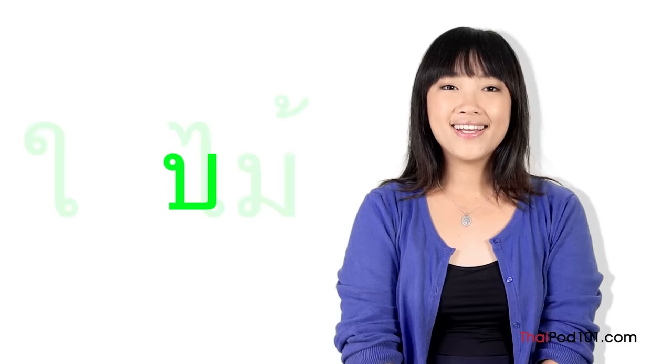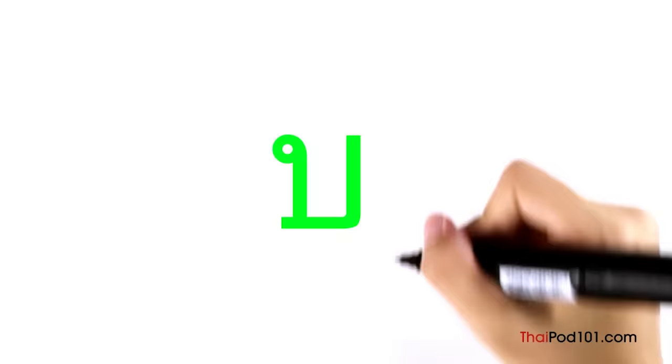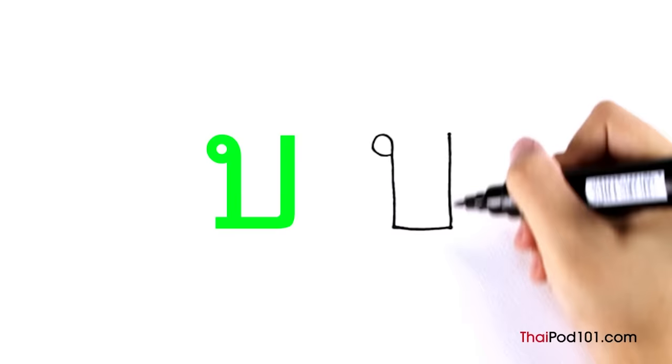The third consonant is Bo-bai-mai. As the initial consonant it makes the sound B like the B in 'bucket.' You can think of the shape as a bucket to help remember its sound. Its ending sound is a P stop — we shut off the flow of air by closing our lips. Bo-bai-mai is very easy to write: it's just like Maw Maa or Naw Nu without a loop at the bottom. Start with a clockwise head and then add three straight lines.